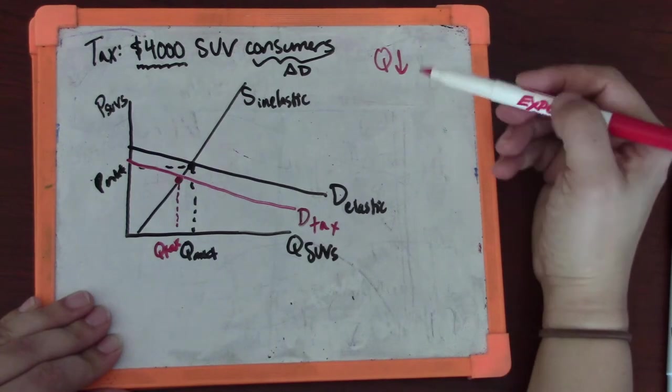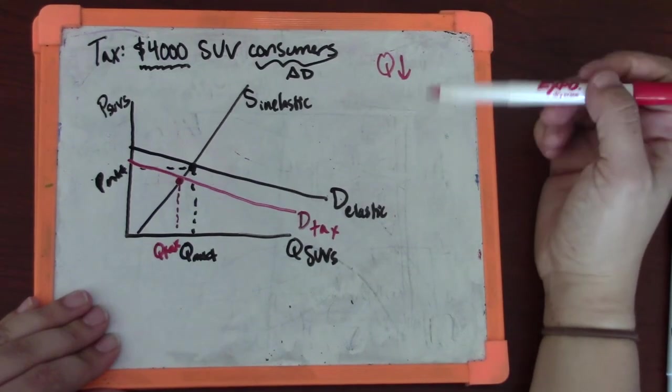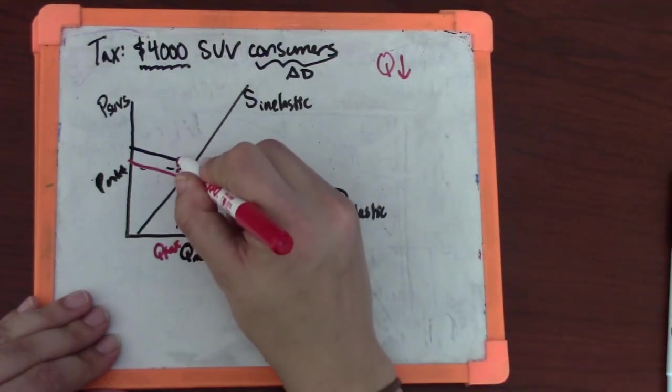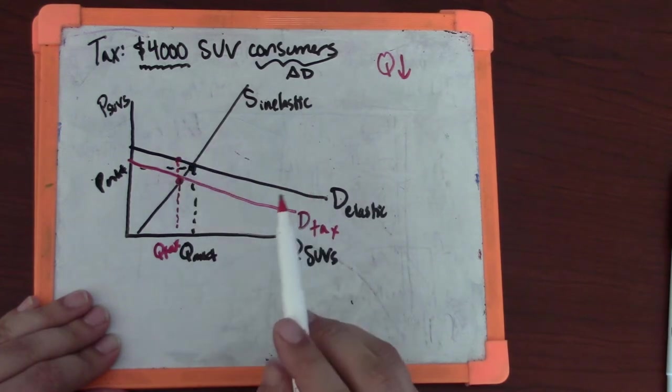It's one of the things we like about taxes and subsidies: we never get a shortage or a surplus. The quantity supplied is always equal to the quantity demanded; there's no SUVs sitting around unsold.